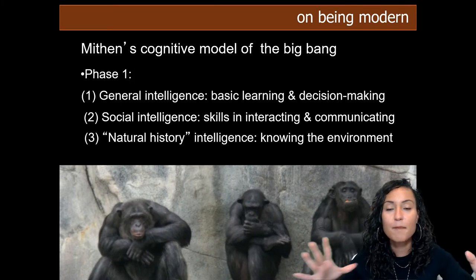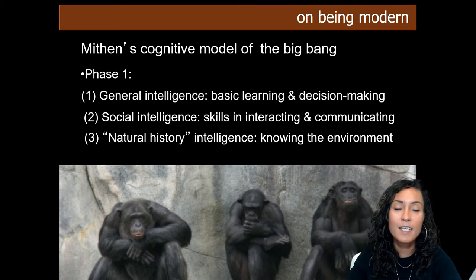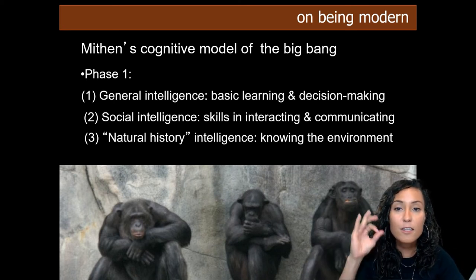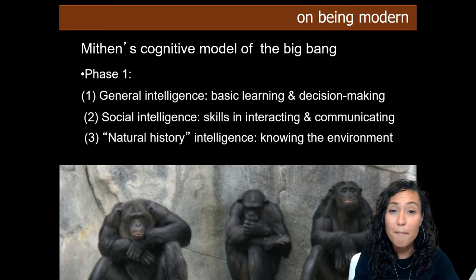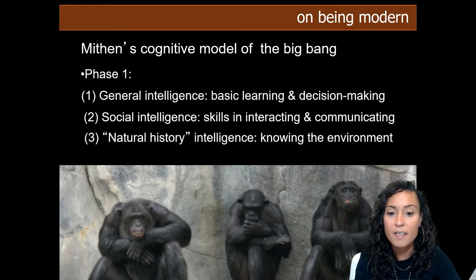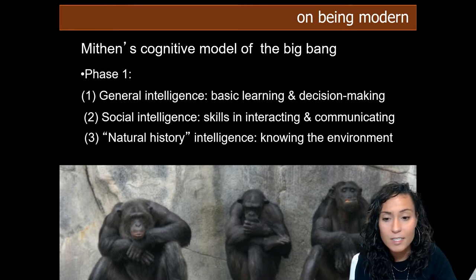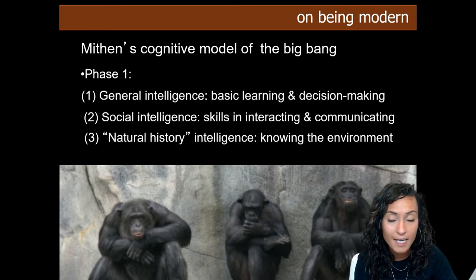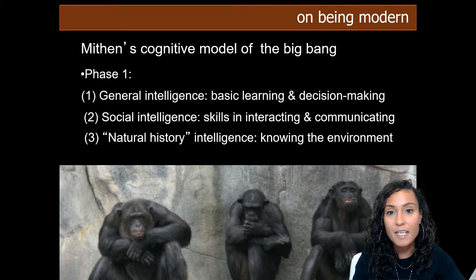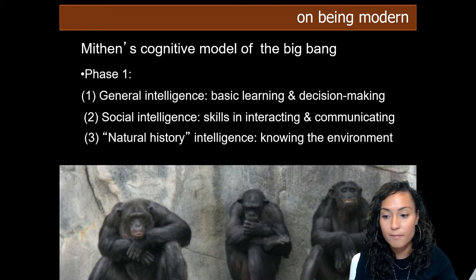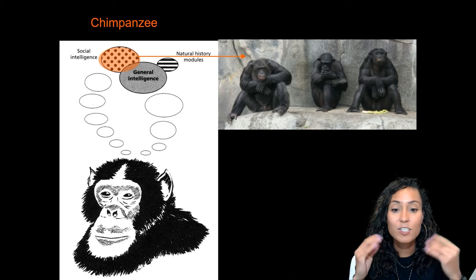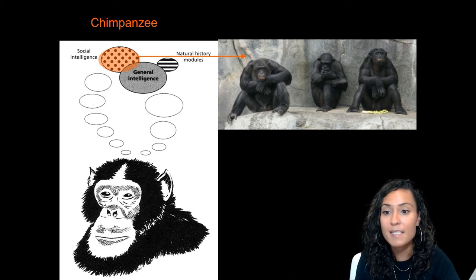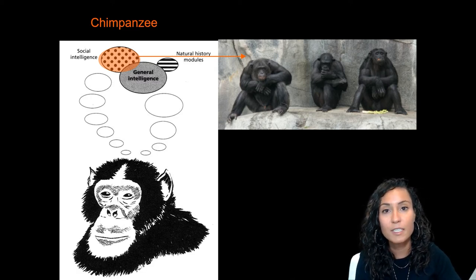Mithin sets up this transformation from compartmentalized to interconnected intelligences in three phases. In phase one, our hominin ancestors primarily relied on only three types of intelligences: general intelligence, referring to basic learning and decision-making; social intelligence, referring to skills in interacting and communicating; and natural history intelligence, our ability to know the environment. Phase one is found even in our distant ancestors, chimpanzees.